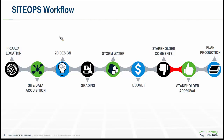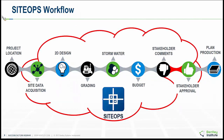Looking at the SiteOps workflow: it goes from the project straight to plan production. This part of the workflow has nothing to do with creating plans. We're going to get a drawing file to start labeling, adding border dimensions, and fine-tuning the design. The first thing we're trying to do is go from a project idea to a stakeholder approval. What are the ramifications of a project if we do something?